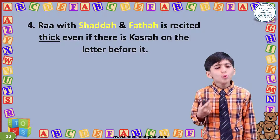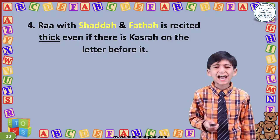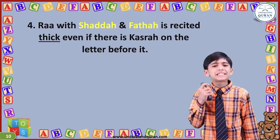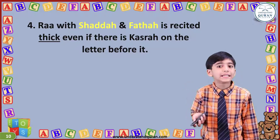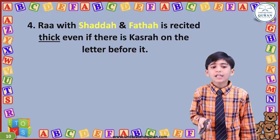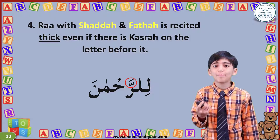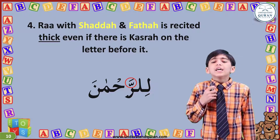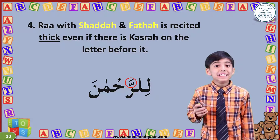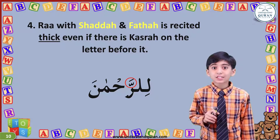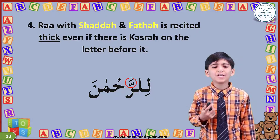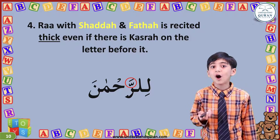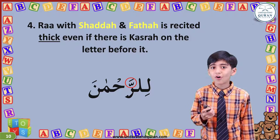Ra is recited thick even if there is a letter with kasra before it — like over here in Lirrohmani. This Ra is thick because there is shada and fatha on it, even though the La before it in Lirrohmani has kasra on it.